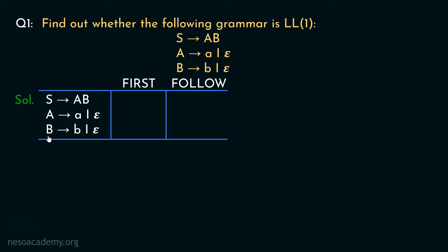Coming to B — B has got two different production rules. B can be rewritten as terminal small b, or it can also be rewritten as epsilon. So in the first of B, we include the symbols small b and epsilon. Similarly, A is also involved in two production rules and can generate either terminal small a or epsilon. Therefore, in the first of A, we include small a and epsilon.